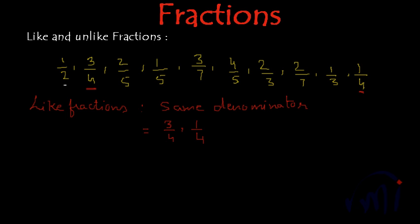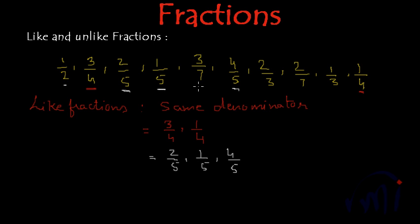Searching further, the third fraction has 5 as the denominator, and this one also has 5, and here also we have 5 as the denominator. So we have got one more group of like fractions: 2 by 5, 1 by 5, and 4 by 5. Then in the fifth fraction we have 7 as the denominator, and here also we have 7. So this is another group of like fractions: 3 by 7 and 2 by 7.